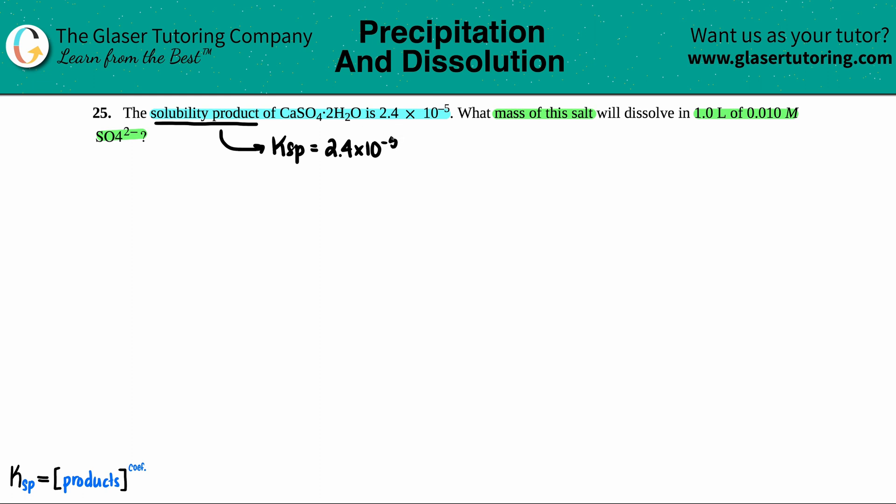But remember, anytime that we're working with the Ksp, we have to have a balanced equation. Now, remember, with hydrates, we only take into consideration the ionic compound because H2O is going to act as a liquid when it breaks off. And liquids don't get included in the Ksp or any K value. So we're just going to dissociate the calcium sulfate. So we have CaSO4. That's a solid.